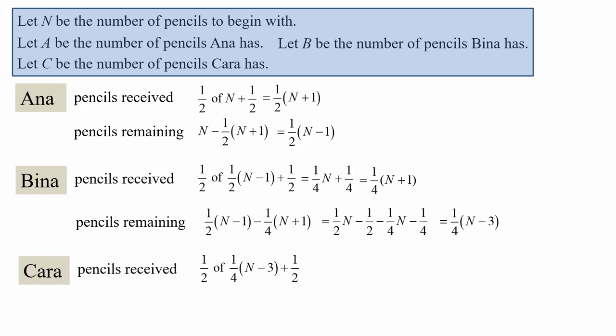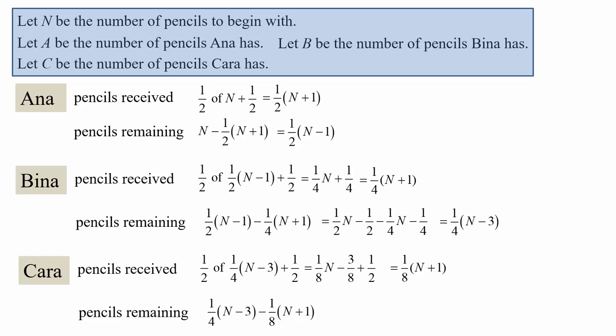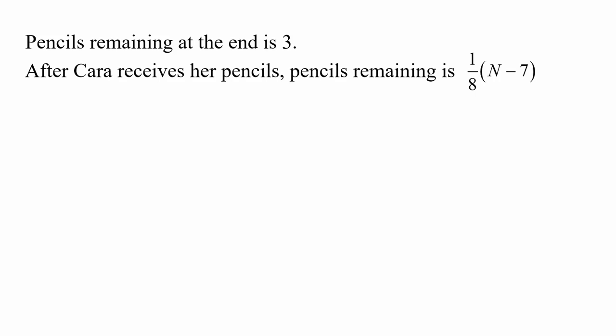Now let's look at Kara. She receives half of a quarter bracket N minus three, plus a half pencil, and that simplifies to one eighth bracket N plus one. And the pencils remaining after Kara has had her share simplifies to one over eight bracket N minus seven. It's the last remainder we are interested in, because that gives us the expression for the number of pencils remaining in terms of N.